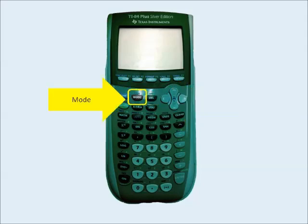The last key for today is the mode key, located next to the blue second function key. The mode key allows us to change the basic preferences for the calculator, such as whether you want decimal answers to have a floating decimal or a fixed decimal, if you want angle measures to appear in degrees or radians, how graphs will appear, and to set the calendar and the clock.